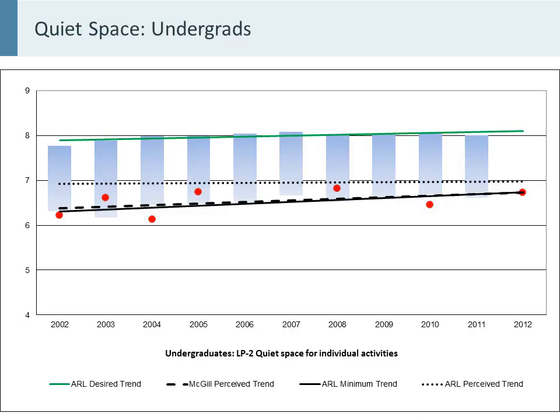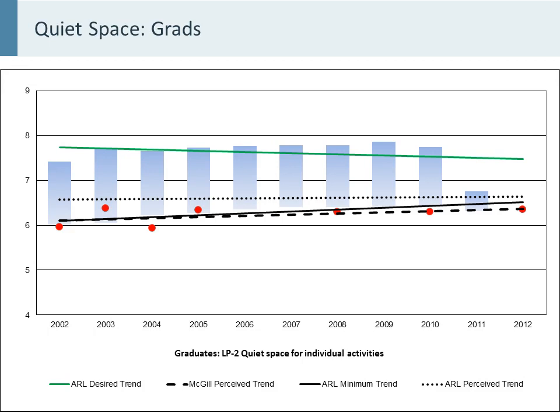One of the benefits of running LibQual over more than a decade is the longitudinal trends that are available to us. Here I have a 10-year span as an example. We can see changes in response to particular items — this is Libraries Place Item 2, quiet space for individual activities — and undergraduate students who place a high value on library space and quiet study space. We can compare that to the ARL average as well over time, and we can see that we are getting closer to the average, which is something that we are always trying to do.